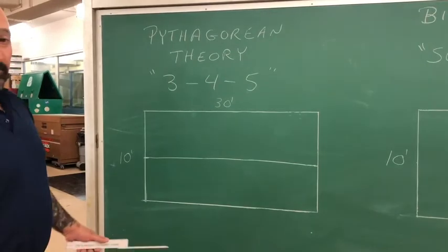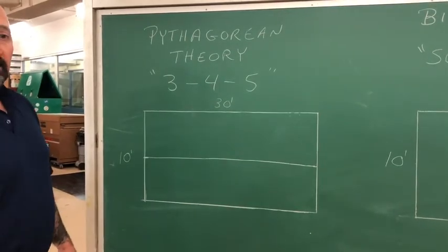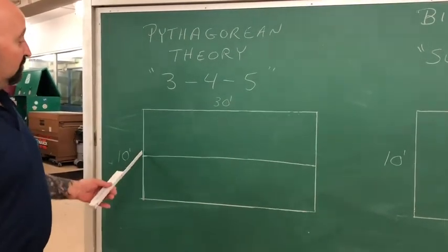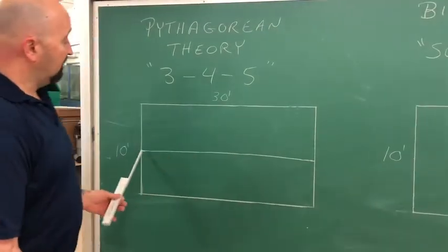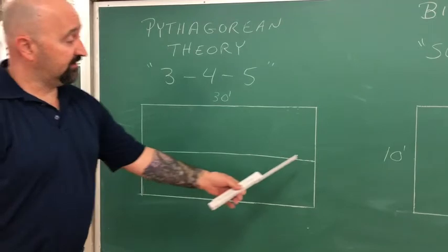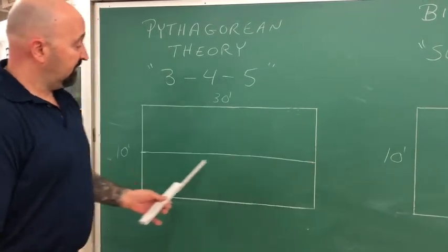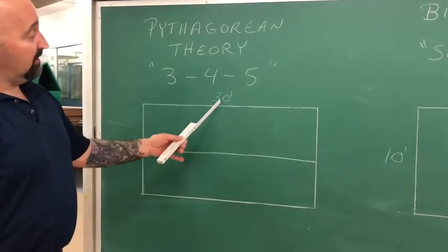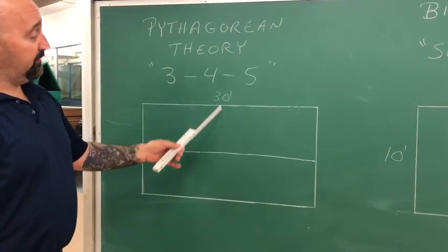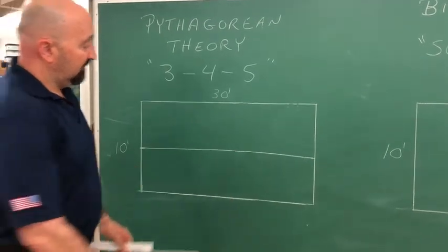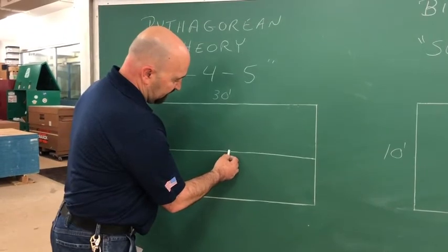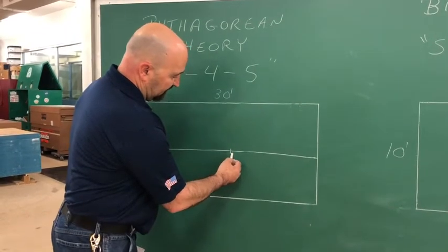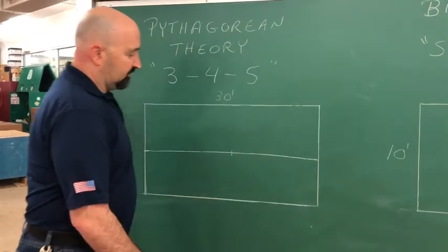Next step from here is to take this room and divide this in half. If it's 30 feet, it will be 15 — you make a mark, a center mark.